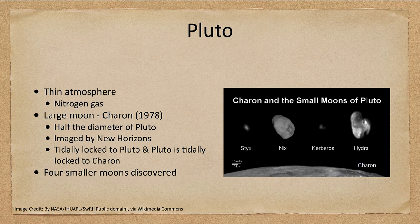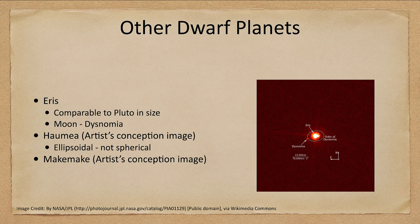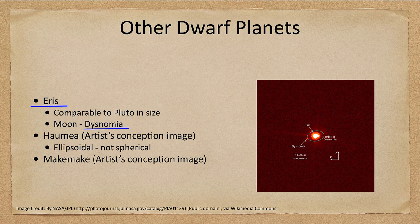Ceres and Pluto are the best-studied dwarf planets, but there are others. Eris is comparable to Pluto in size and does have a moon, Dysnomia, which helps us determine its mass from its orbit. However, Eris is even further away than Pluto, making it essentially impossible to get any imaging of its surface from Earth.